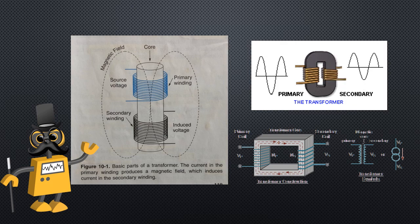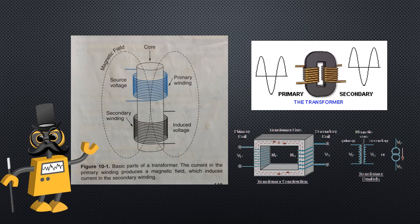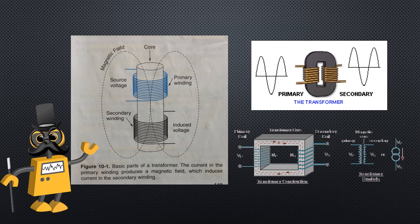Windings are normally referred to as high voltage or low voltage rather than primary or secondary. High voltage is usually your primary; low voltage is usually your secondary, although not always.